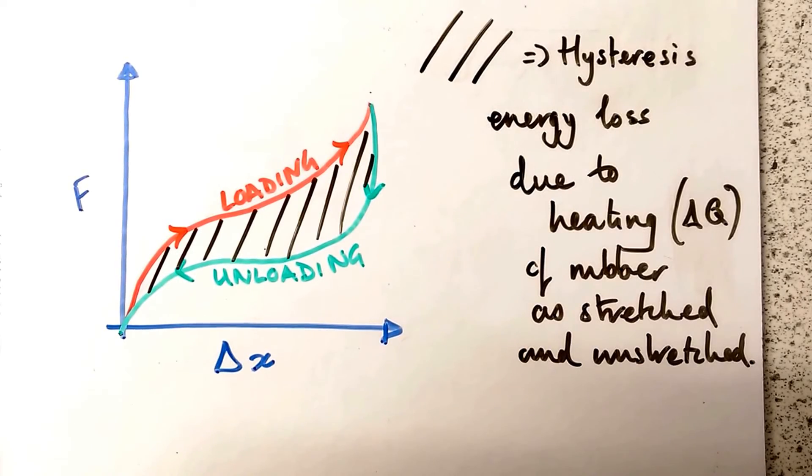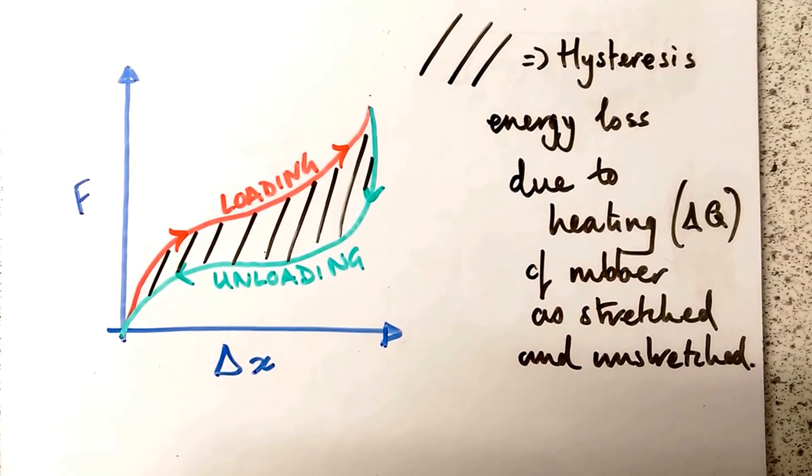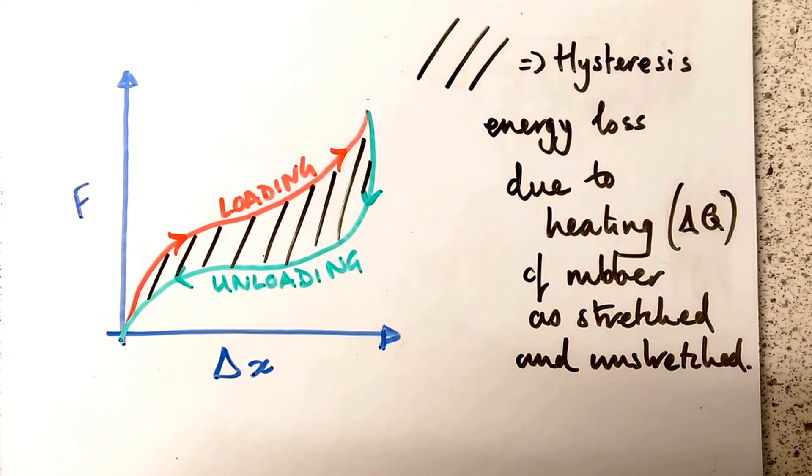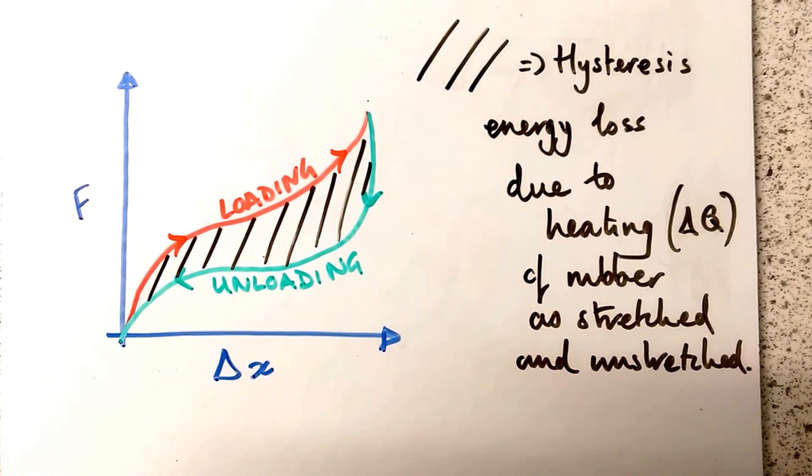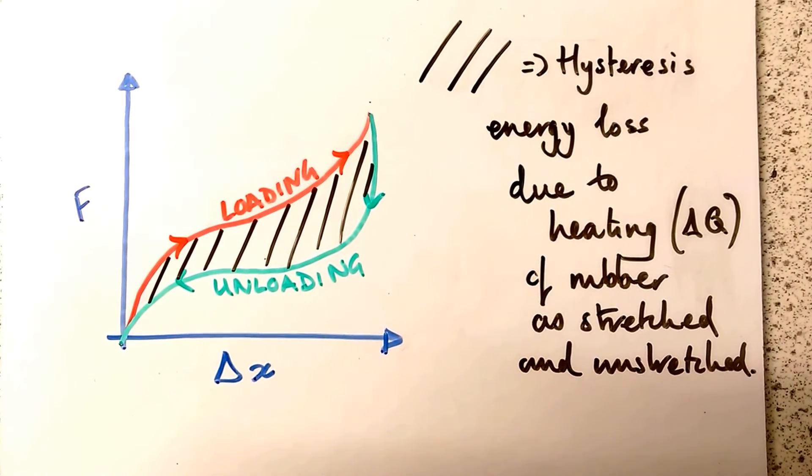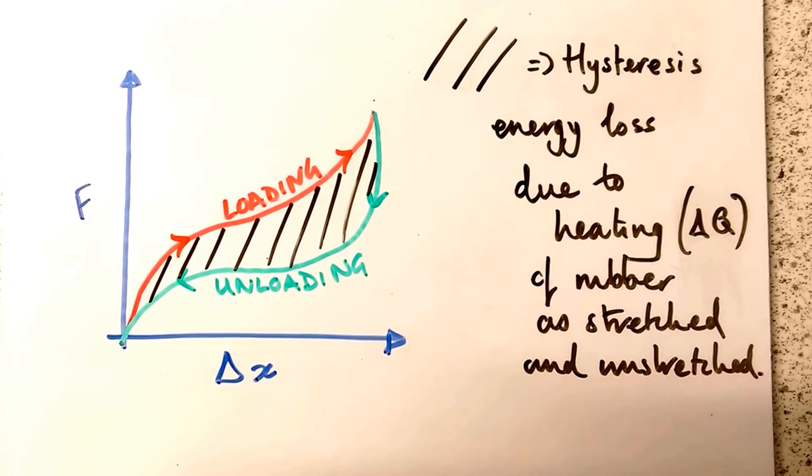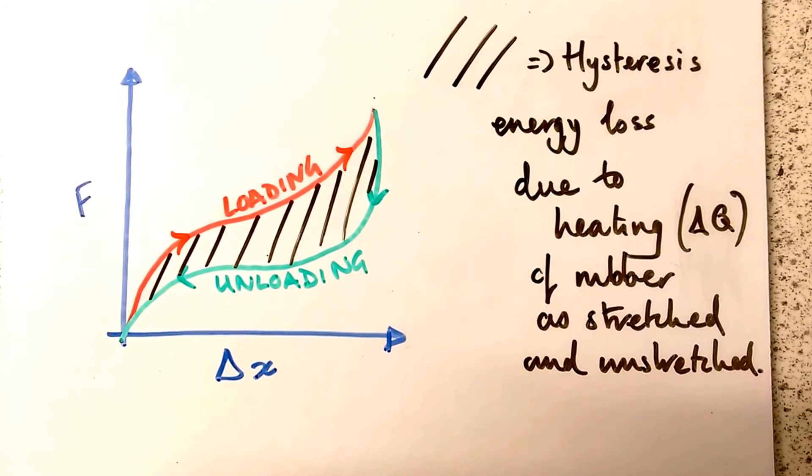I just want to show you something called hysteresis. Hysteresis happens to certain materials when they're loaded or unloaded. You can see the red line shows the force-extension graph as I'm loading this object. Let's say it's an elastic band - this is something which normally happens to polymers, anything made out of longer fibers.